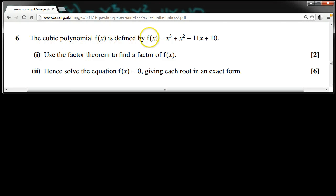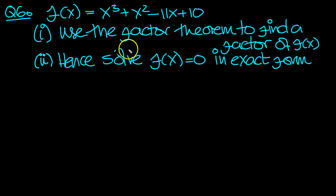The cubic polynomial f of x is defined by f of x equals x cubed plus x squared minus 11x plus 10. Use the factor theorem to find a factor of f of x. Hence, solve the equation f of x equals 0, giving each root in an exact form. So here's the question in summary.